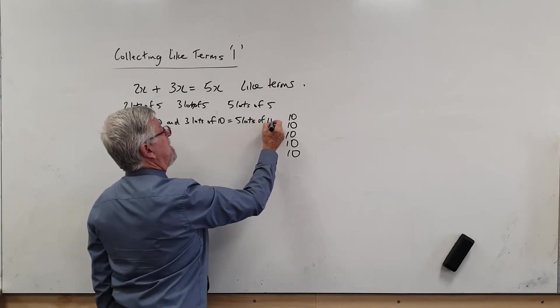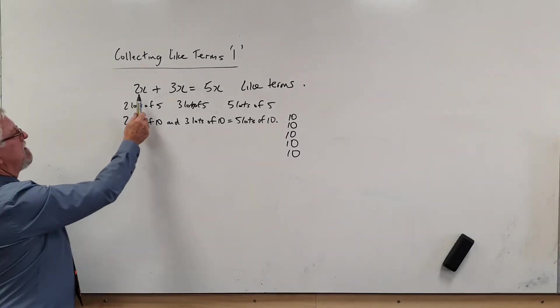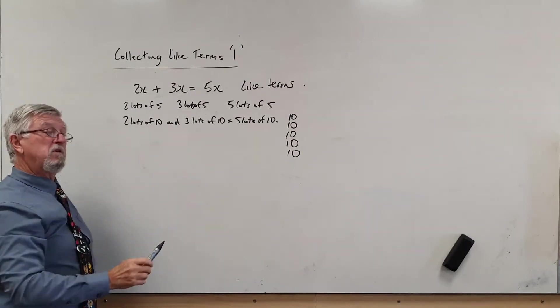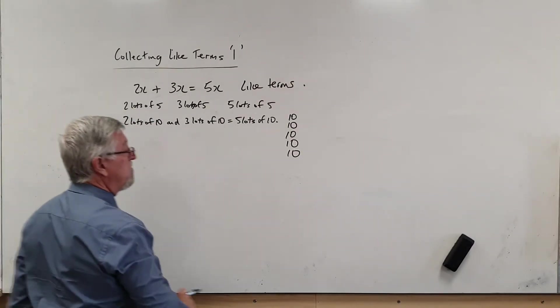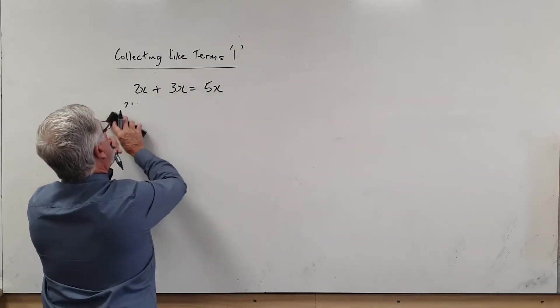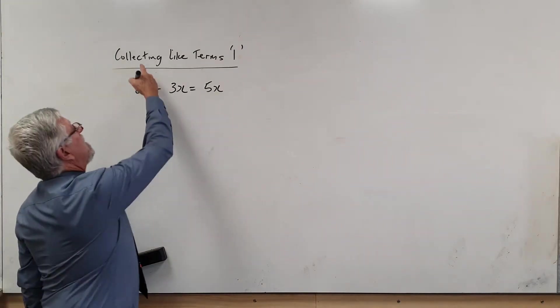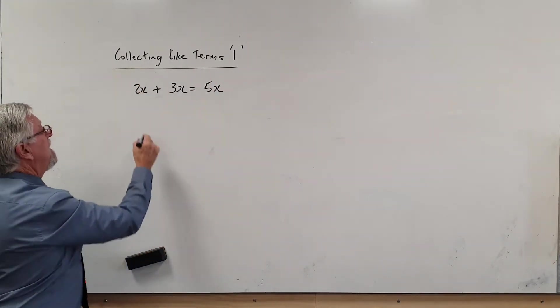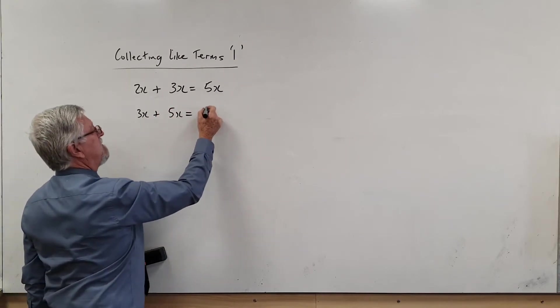Two lots of ten and three lots of ten is five lots of ten. That's if you knew what the number was, but we don't know what the number was, especially when it's an equation that we're trying to solve in a real-life situation. So the rule comes down to this: just like what happened with those numbers, if I had 2X and 3X, I get 5X. That's called collecting like terms. If I had 3X and 5X, I'd get 8X.